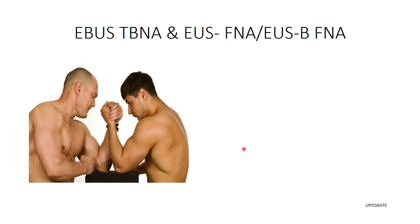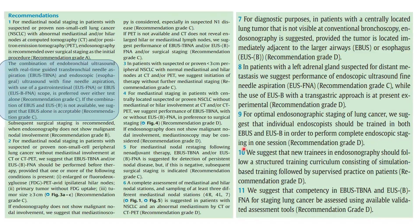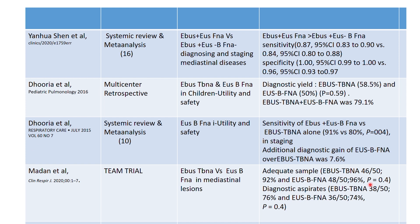A combined approach is always helpful in staging and diagnosis of lung cancer, and guidelines recommend it whenever available and when ROSE is not available. A forest plot published by Vilmann et al. in Endoscopy in 2015 showed that yield increased by 13% when a combined approach was used over EBUS-TBNA alone, and by 21% over EUS-FNA alone. Overall, EUS-B FNA is safer, efficacious, proven safe in children, requires lesser procedure duration, and has higher patient and operator comfort with a lower complication rate.